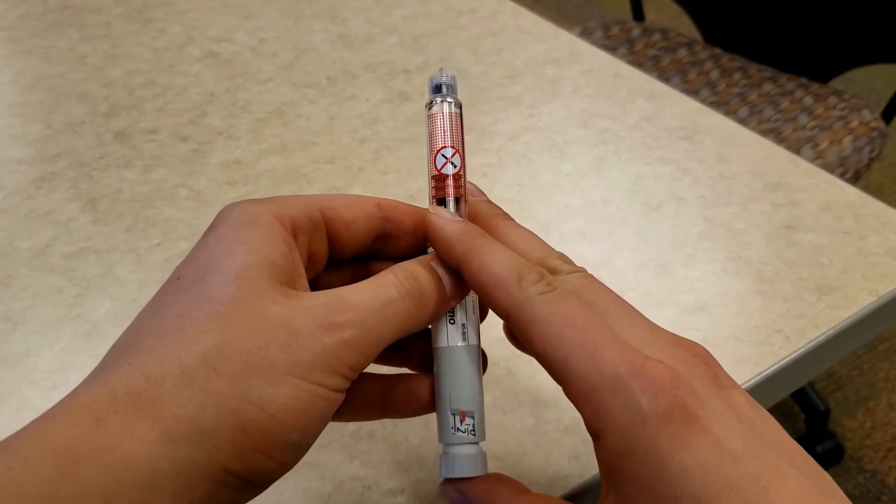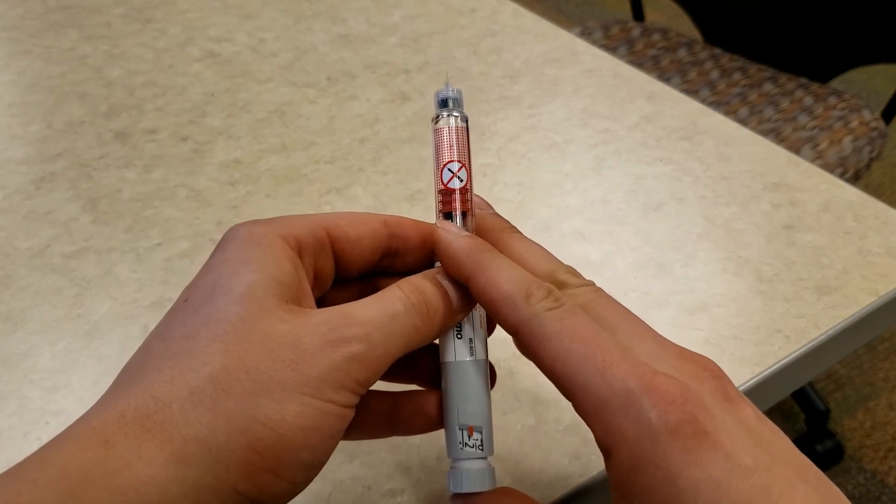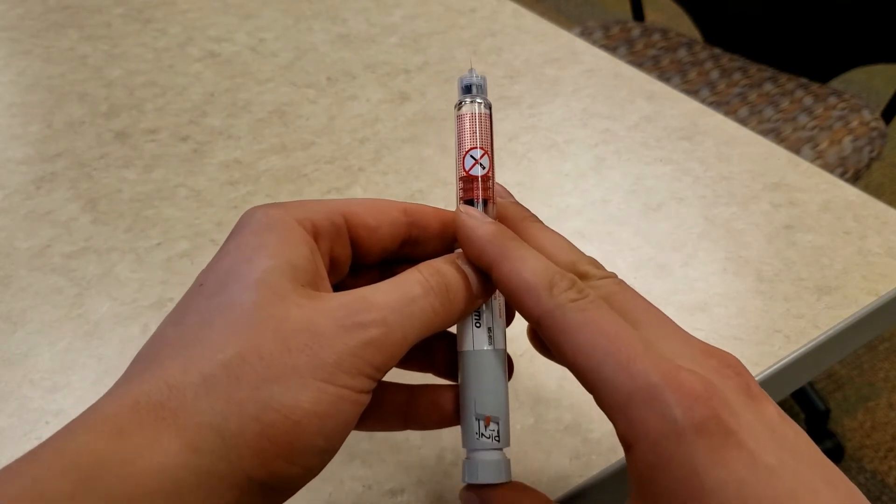Then, press the button on the bottom of the insulin pen until a drop of insulin appears at the tip of the needle.